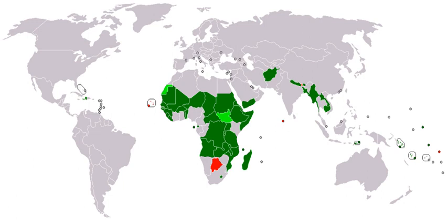A report by the World Bank in 2018 estimated that around 143 million people in three regions — sub-Saharan Africa, South Asia, and Latin America — could be forced to move within their own countries to escape the slow-onset impacts of climate change. Economic development and climate are inextricably linked, particularly around poverty, gender equality, and energy. Tackling climate change will only be possible if the Sustainable Development Goals are met; goal number 13 is on climate action.